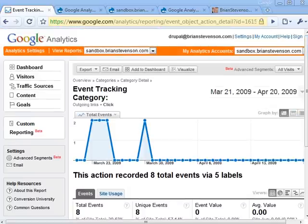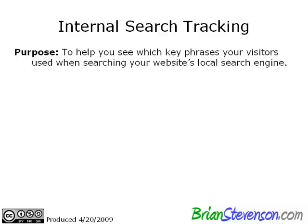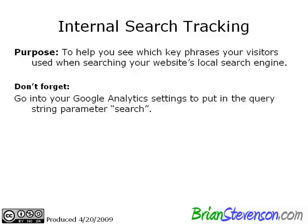Let's take a look at internal search tracking. So what is internal search tracking? It will help you see which key phrases your visitors used when searching your website's local search engine. You'll need to do a little bit of tweaking to get this to work — there is a query parameter called 'search' that needs to be included in your Google Analytics settings. Let's flip over to the web browser and have a look at that.